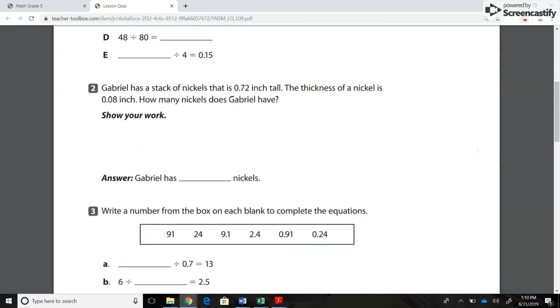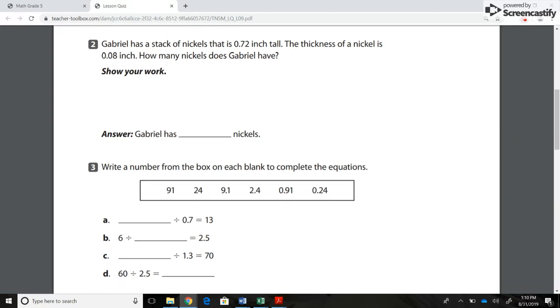Number 2. Gabriel has a stack of nickels that is 0.72 inch tall. The thickness of a nickel is 0.08 inch. How many nickels does Gabriel have? Show your work. Answer: Gabriel has blank nickels.